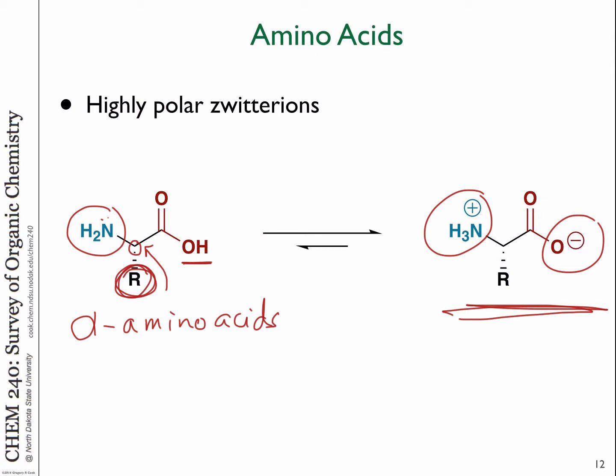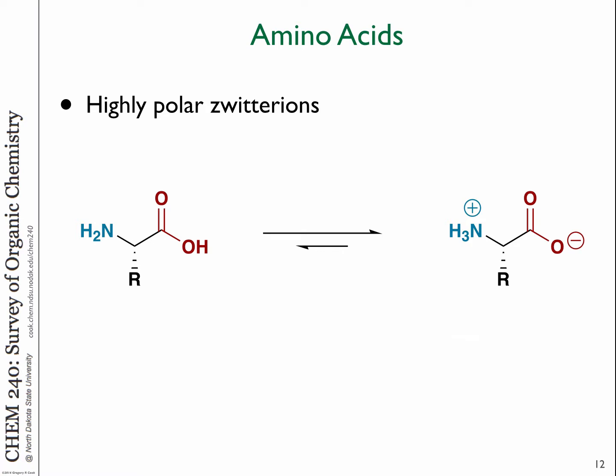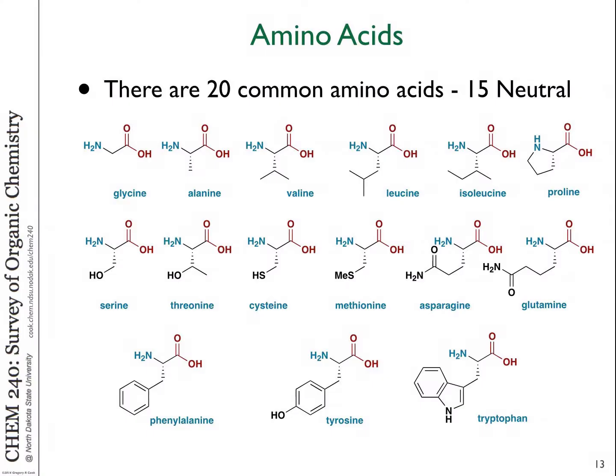Zwitterion means both charges — I think that stems from German. The molecule is overall neutral but internally has a plus and a minus charge. Adding a base will deprotonate the ammonium to give the neutral amine form and so on. This zwitterionic nature makes pure amino acids pretty readily soluble in water because they have these charges. When we think about protein structures, they're made up mostly of 20 common amino acids, which make up biological structures.